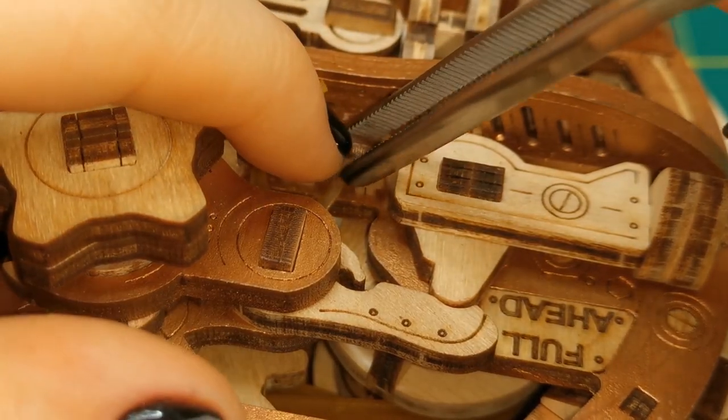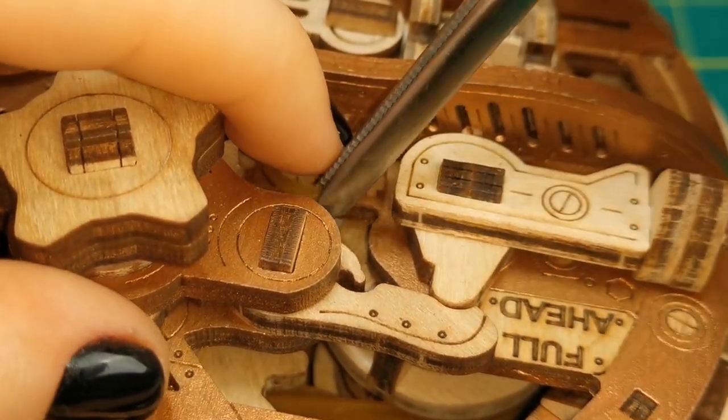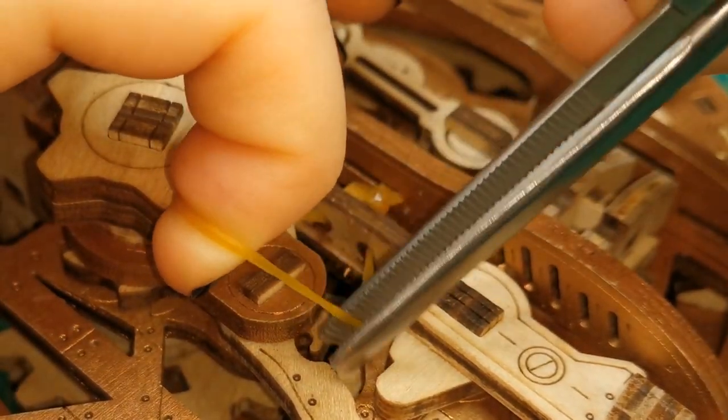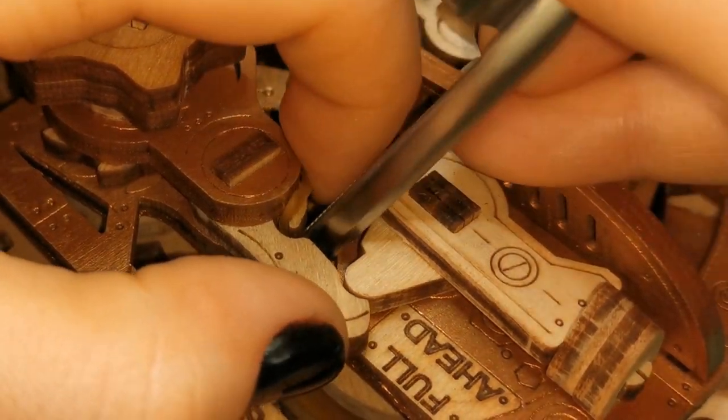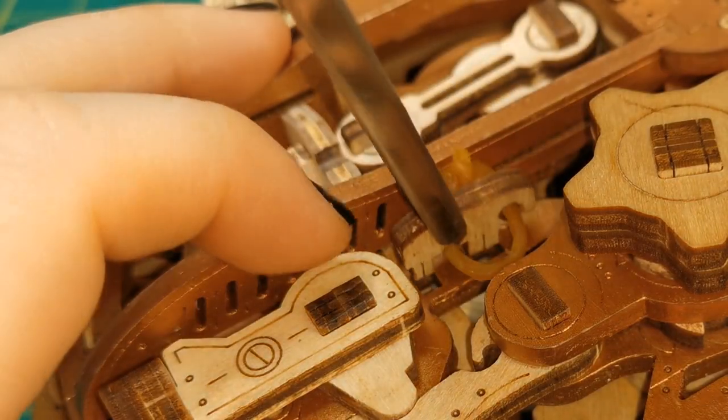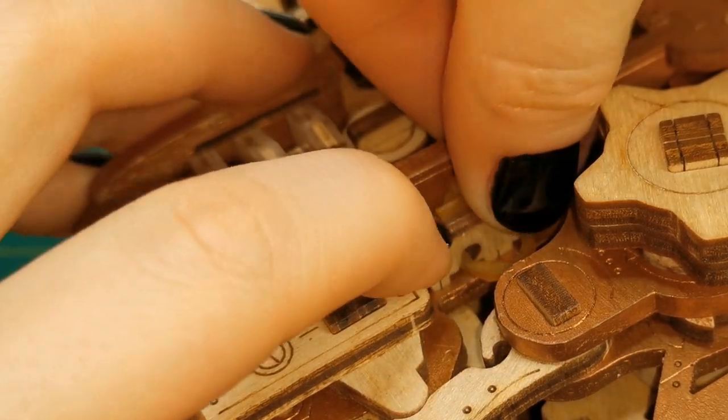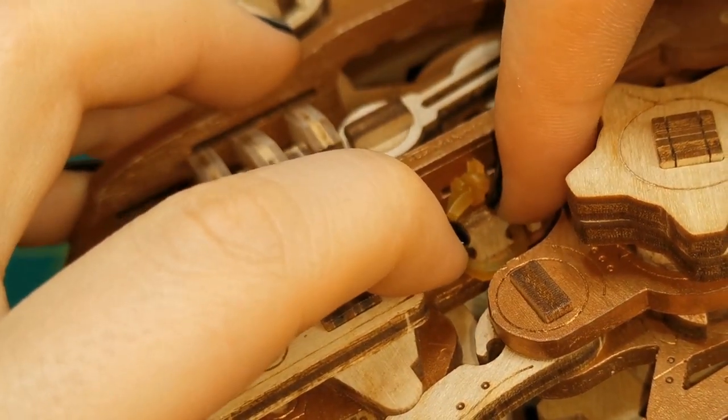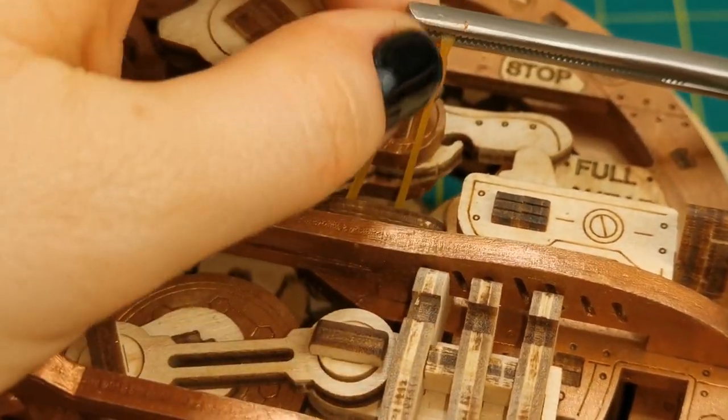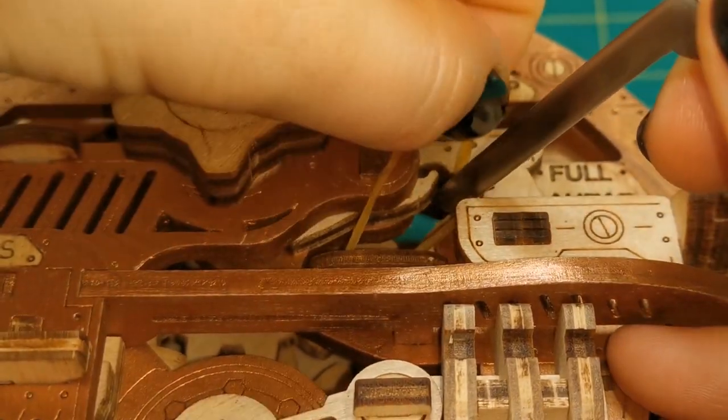Now this rubber band is rather difficult to replace, because most of the pieces of the monowheel are already assembled. Because of the tight space, I'm using tweezers to handle the rubber bands.